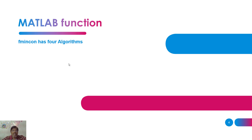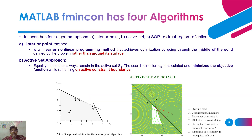In MATLAB we have a function called fmincon, and using that we can address four algorithms. Those are: interior point, active set, sequential quadratic programming, and trust region reflective. You can try any of these functions to solve a problem and showcase your quality assessment. Let's look at each one.